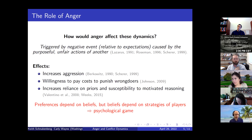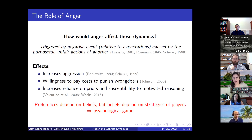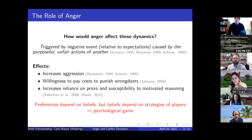From experimental work on anger, we know that preferences when you are angry shift, but these preferences depend on the beliefs you have about who you're engaging with. The problem is that these beliefs in turn depend on the strategies other players have taken in the game—so preferences and beliefs become endogenous to the actions of the game. This leads us to use a psychological game framework to model this kind of interaction.